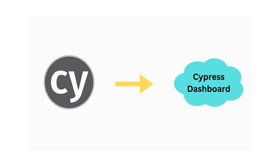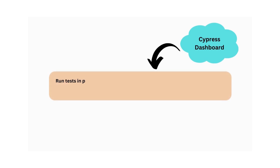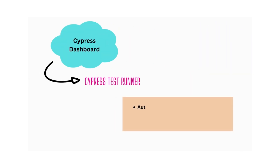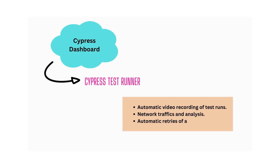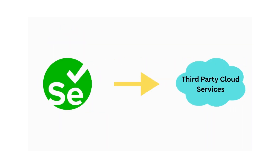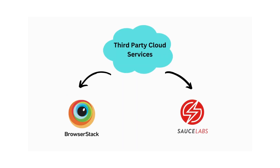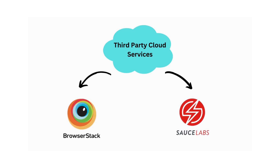Cypress provides Cypress Dashboard, which is a cloud-based service that allows you to run tests in parallel on multiple machines and view test results in a centralized location. Cypress Dashboard is tightly integrated with the Cypress test runner and provides additional features such as automatic video recording of test runs, network traffic analysis, and automatic retries of failed tests. Selenium does not have its own cloud service like Cypress Dashboard; however, Selenium can be used with cloud-based services provided by third-party vendors such as BrowserStack and Sauce Labs.